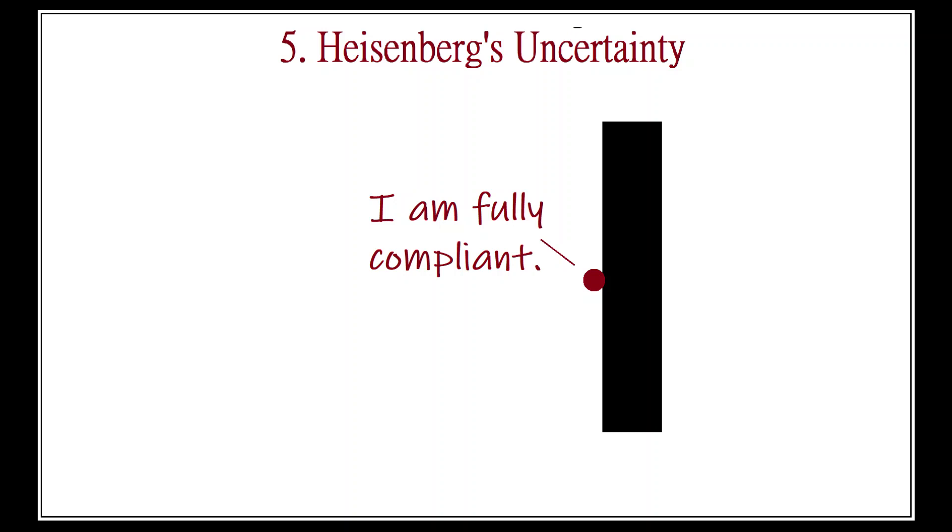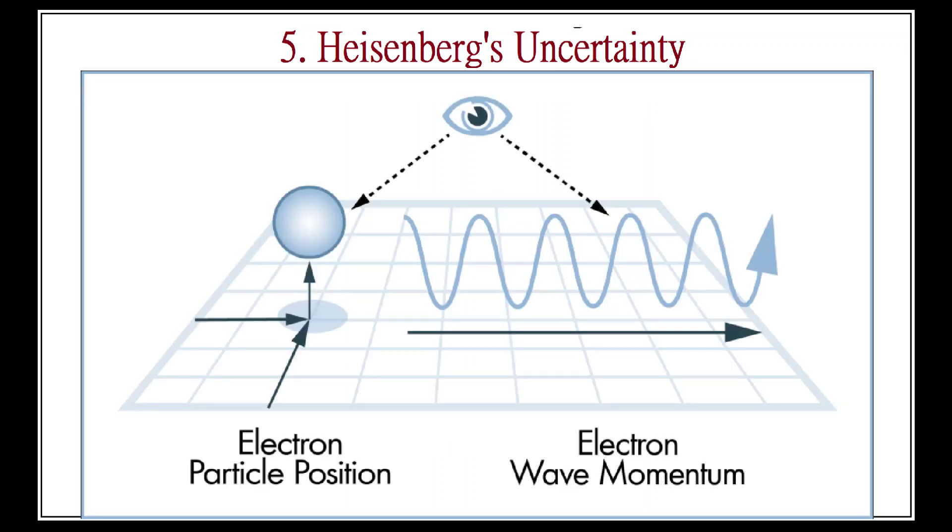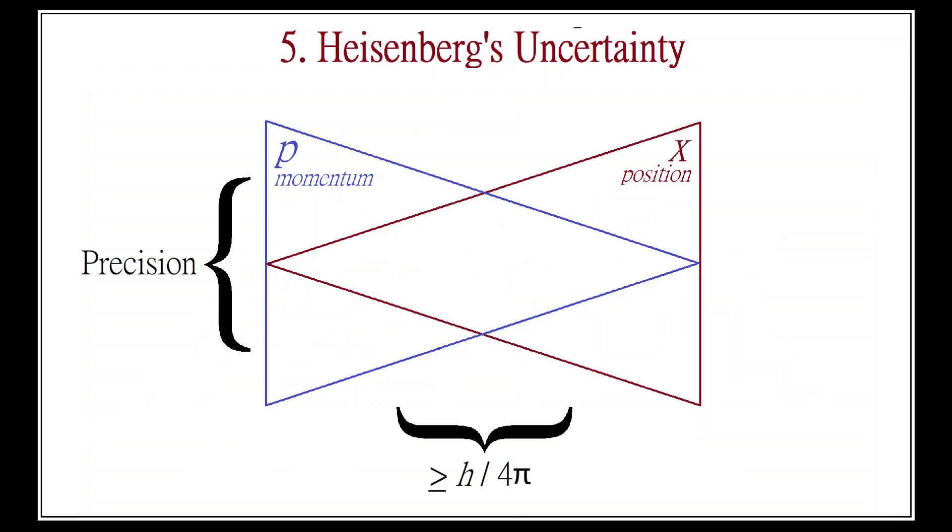So by measuring a particle's position, we give up on knowing its momentum, because the momentum is defined and modeled by the wave function. Thus, we have Heisenberg's famous uncertainty principle, or indeterminacy principle. We cannot know both the momentum and the position of a photon at the same time.